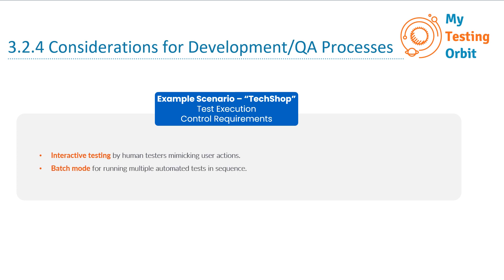Next is batch mode for running multiple automated tests in sequence. Imagine that your team has a pack of automated tests that run together in batch mode. These tests cover various aspects such as product search, payment processing, and user account management. The TAA executes these tests automatically, checking for any issues across different parts of the website.